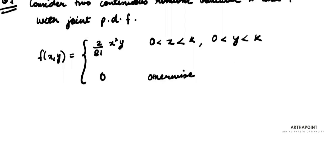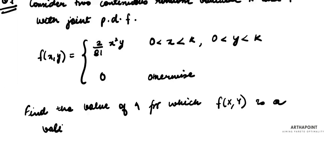It says find the value of k for which f of x, y is a valid joint pdf. Let's try this one. Can we do it?